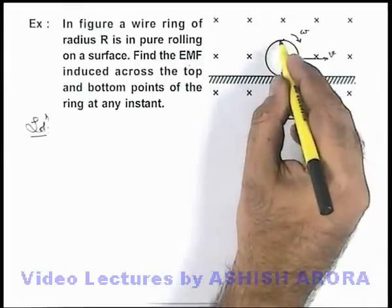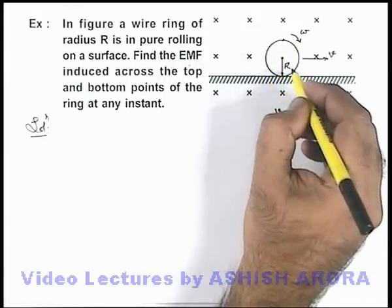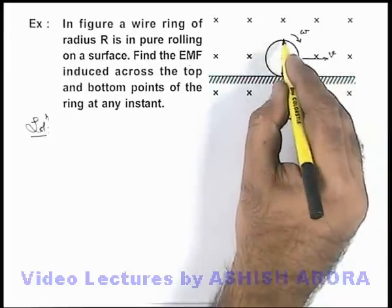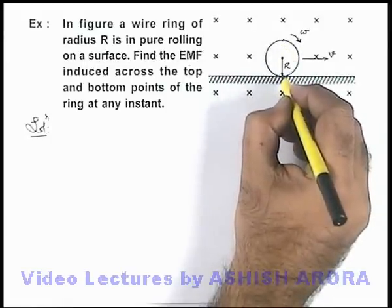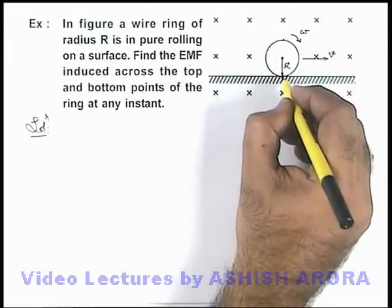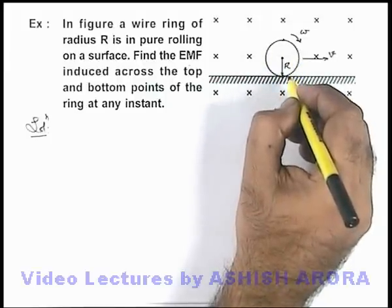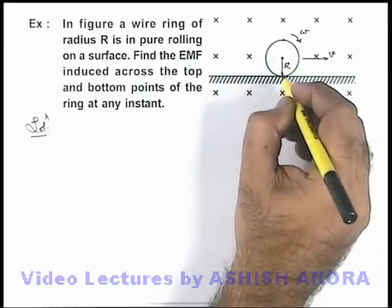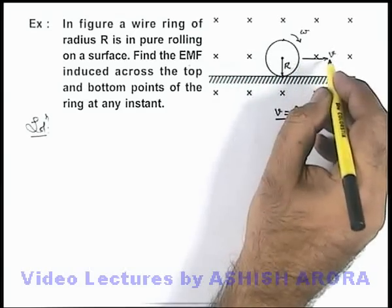So for any random shaped wire or a semi-circular wire, we can say that this is equivalent to a rod of length 2r, which is rotating about the bottom most point, because this is the point which we can treat as the instantaneous axis of rotation of the rod. For this ring, we can apply the direct relation of a rotating rod, or directly a moving rod with a speed v.